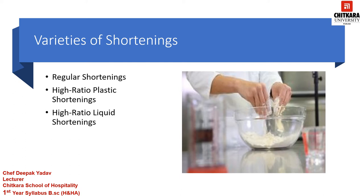If we talk about high ratio plastic shortening, these are soft shortening that spread easily throughout a batter and quickly coat the particles of sugar and flour. They are called high ratio because they were devised for use in cake batters that contain a high ratio of sugar and liquid to flour.